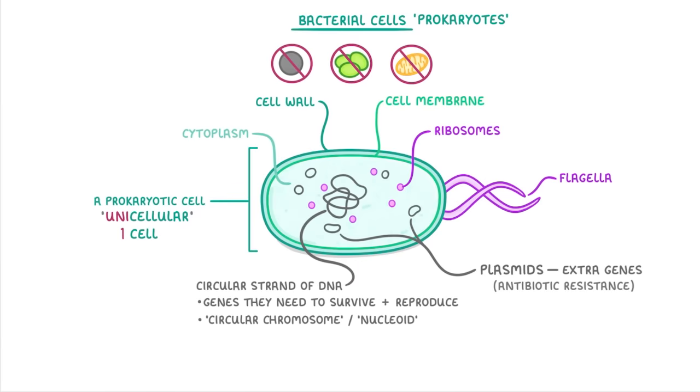Some bacteria also have flagella. These are these thread-like structures that protrude out from the bacteria and are able to rotate to propel the bacteria along. So they basically allow the bacteria to move around.